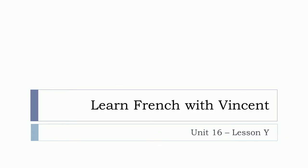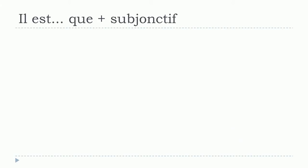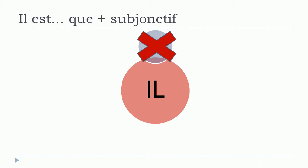Bonjour à tous and welcome to Learn French with Vincent. This is unité 16, leçon Y. In this lesson we'll continue seeing the subjonctif, and more precisely in this video we'll see the structures that use 'il est...que' followed by le subjonctif. Keep in mind that the 'il' here is not translated as 'he' in English — it's an impersonal 'it's'.